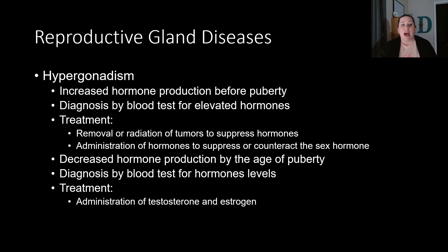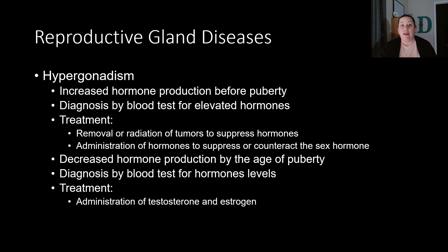This brings us to reproductive gland diseases. These mostly deal with hormones. You can have hypergonadism — increased hormone production that happens before puberty — which often causes what we call precocious puberty, where it starts earlier than it should. Diagnosis is by a blood test looking for elevated hormone levels. Treatment is most commonly removal or radiation of a tumor if present to suppress the hormones — either a tumor in the pituitary gland or on the reproductive organs — as well as administration of hormones to suppress or counteract the sex hormones.